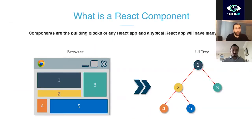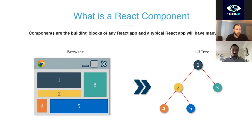Let's start from the very basics and then go to more advanced concepts. What is a React component? Components are building blocks of a React app. As you can see, there is a UI tree of components where one encapsulates the other, and you can build an app with many components inside. A UI component is a JavaScript class or function that contains properties — what we call props — and we return a React element which describes how one section of the UI should appear. On the browser side, number one is one component, number two is a different component, number three is another component, and number five is a nested component of component number two.